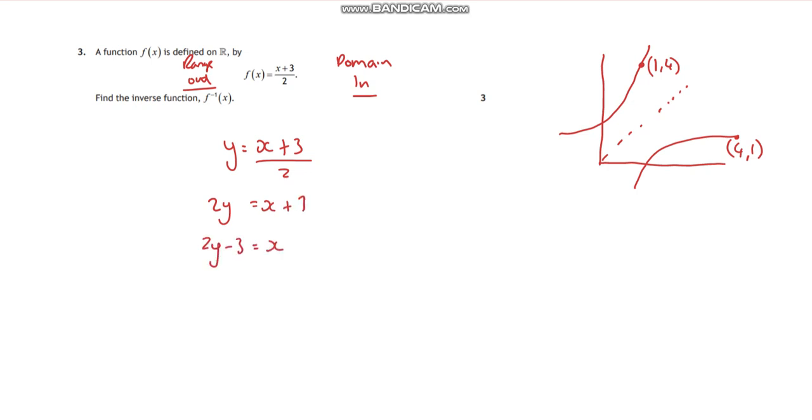And that means then that the inverse function, f^(-1)(x), is equal to 2x - 3. So all I've done there is I've called this my inverse function and I've changed the y here to an x. It's just doing the exact opposite.